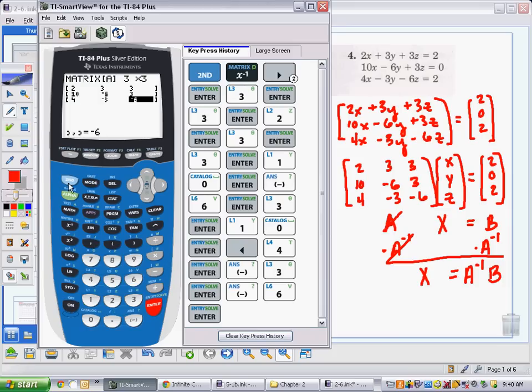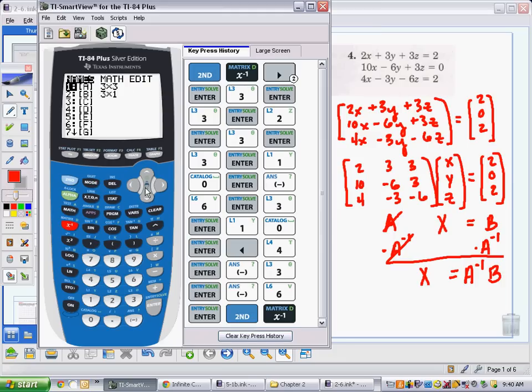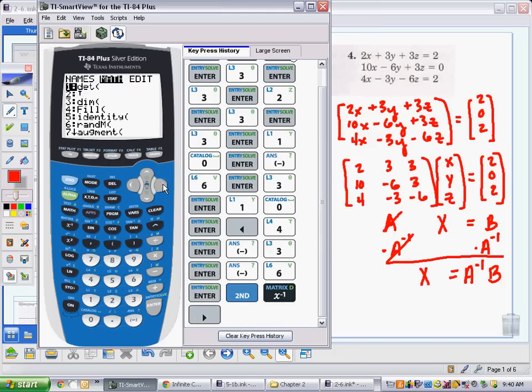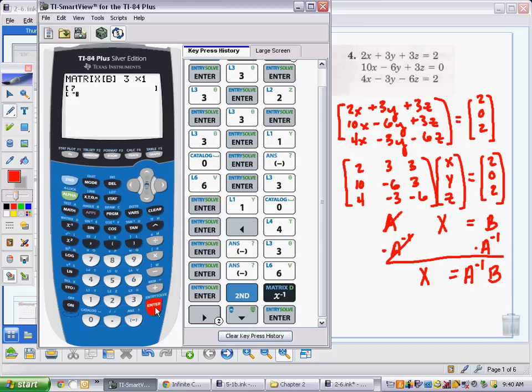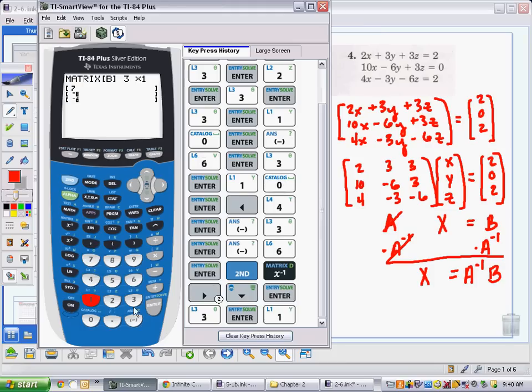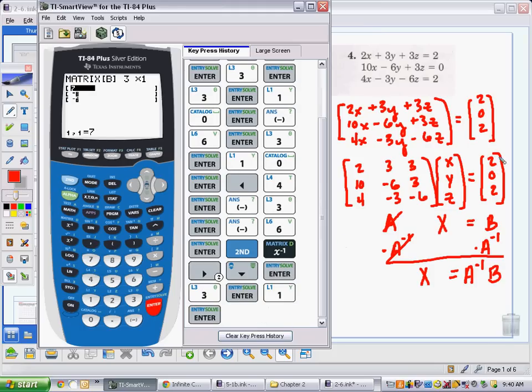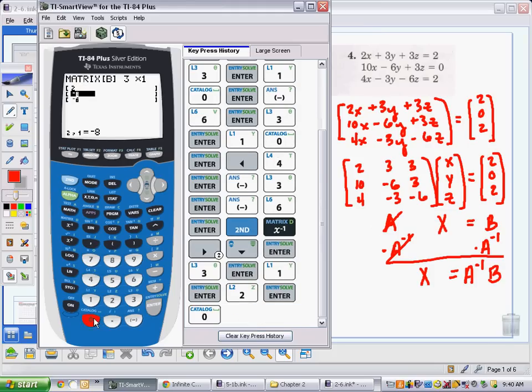Now, I go on and I need to edit matrix B, so I'm going to go back to second, matrix, move to the right. Now, I move down to select matrix B, and this is a three by one. It's a three, enter, one, enter, and I'll place the values from B, two, zero, two. Two, enter, zero, enter, two, enter.